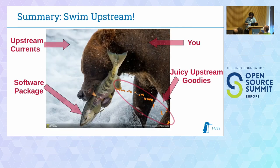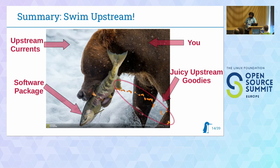To sum up: you have this juicy upstream fish — that's the one you want. It's harder at first, but the big bears hunting upstream have more of the juicy upstream goodies. That's where you want to go. Previously you had a downstream BSP with all things integrated, but if you want to use mainline, you probably don't have a BSP where everything is there. My colleague Roland will now tell you how it could look to integrate an upstream-based BSP using Yocto, Rauc, and Barebox.